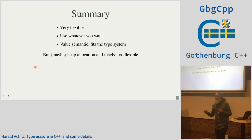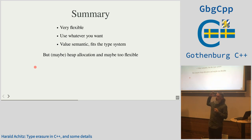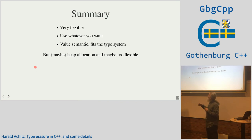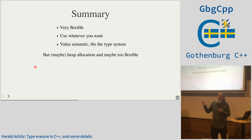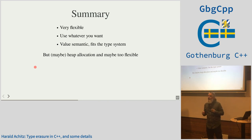So `any` is very flexible — you can use it with whatever you want as long as the type is copyable. It has value semantics, so it looks natural. But we might have heap allocation. And it's maybe too flexible, because normally you don't want to store literally whatever you want.